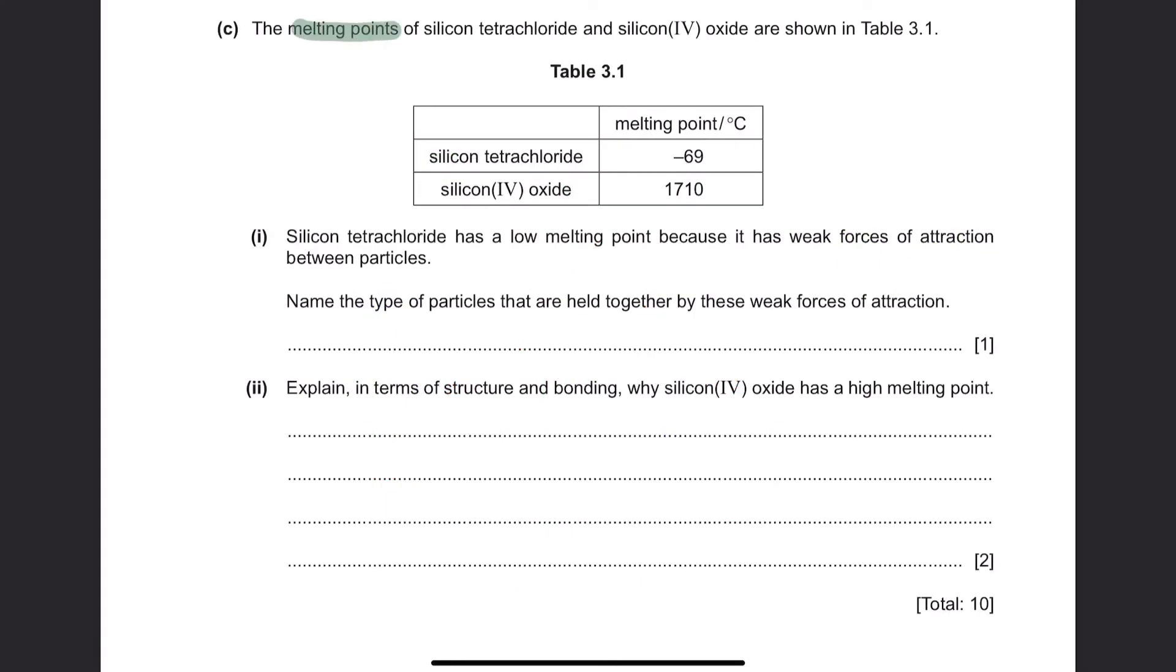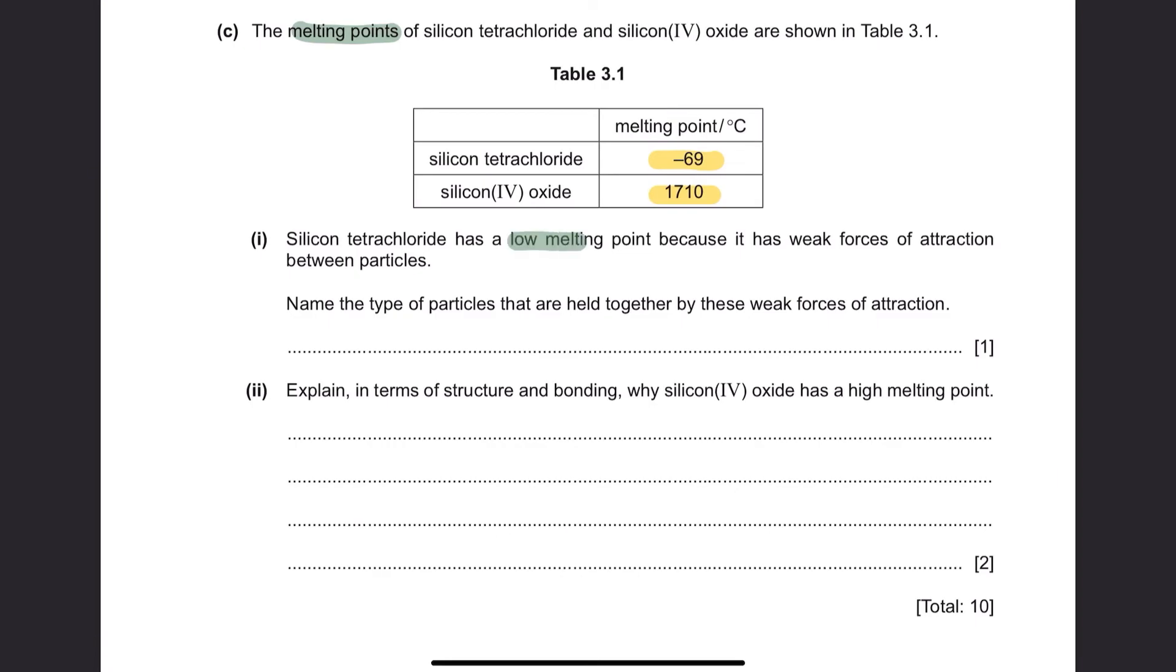Question C. The melting points of silicon tetrachloride and silicon oxide are shown in Table 3.1. Part 1. Silicon tetrachloride has a low melting point because it has weak forces of attraction between particles. Name the type of particles that are held together by these weak forces of attraction. The type of particles are known as molecules.